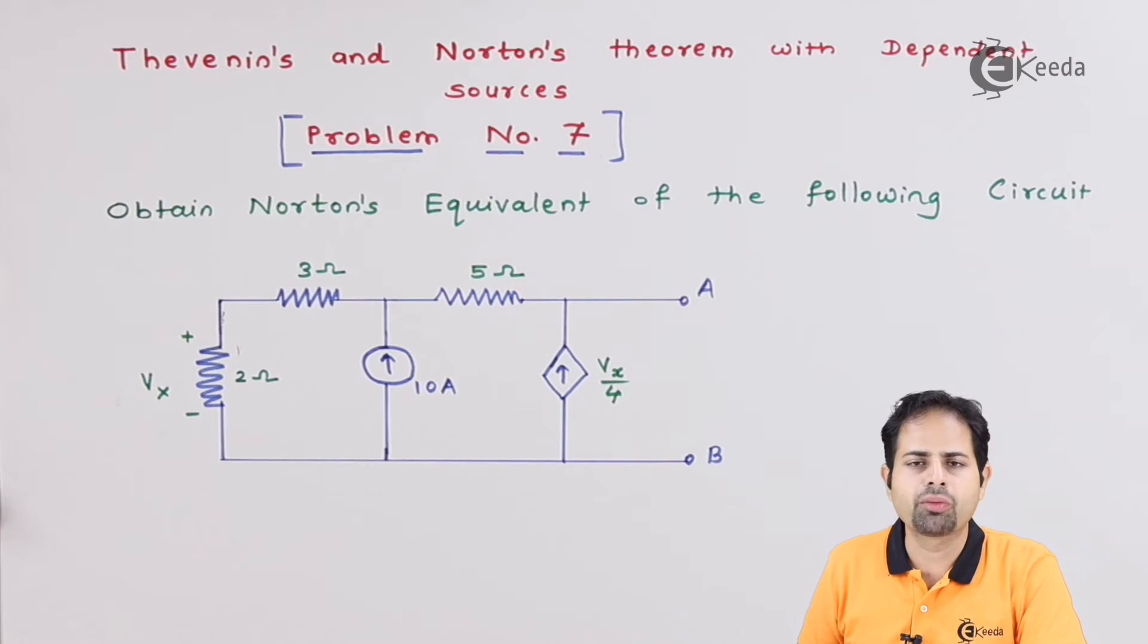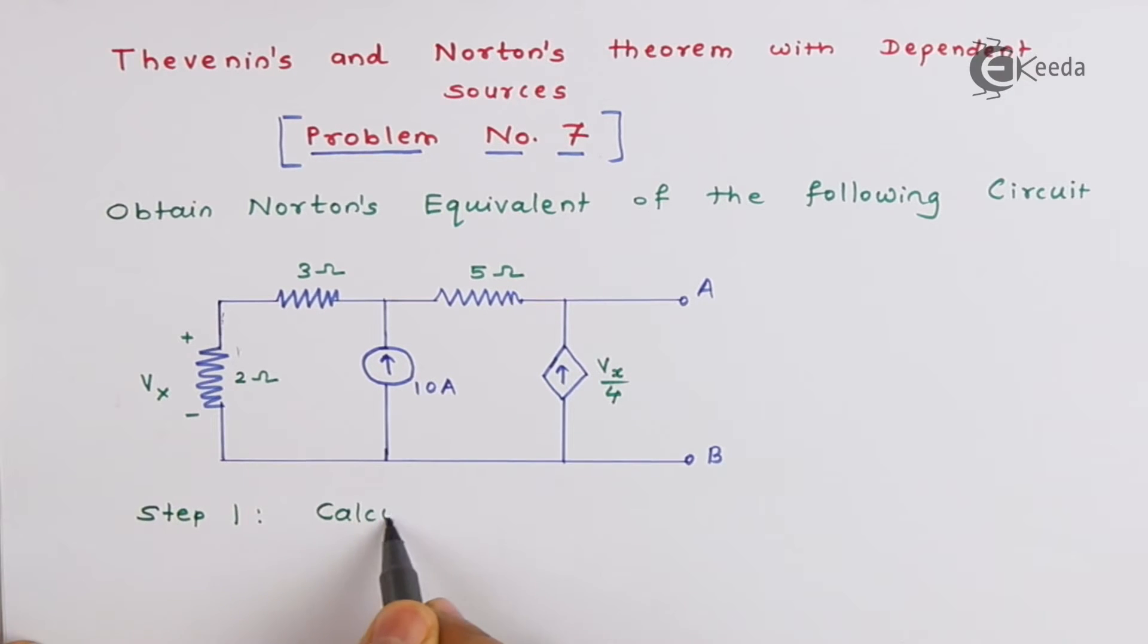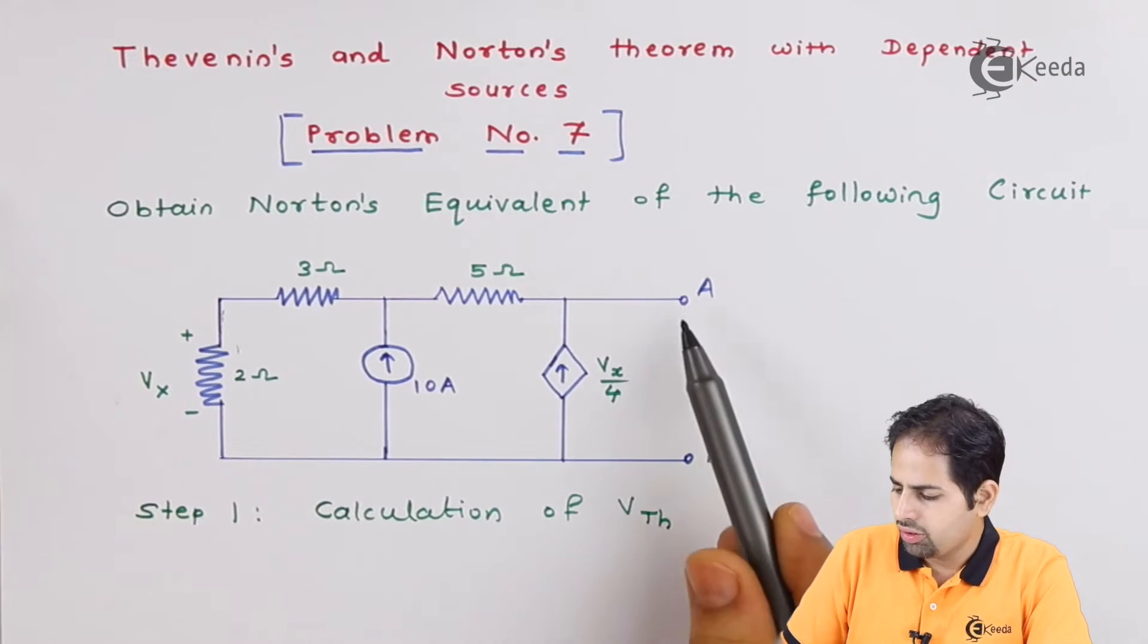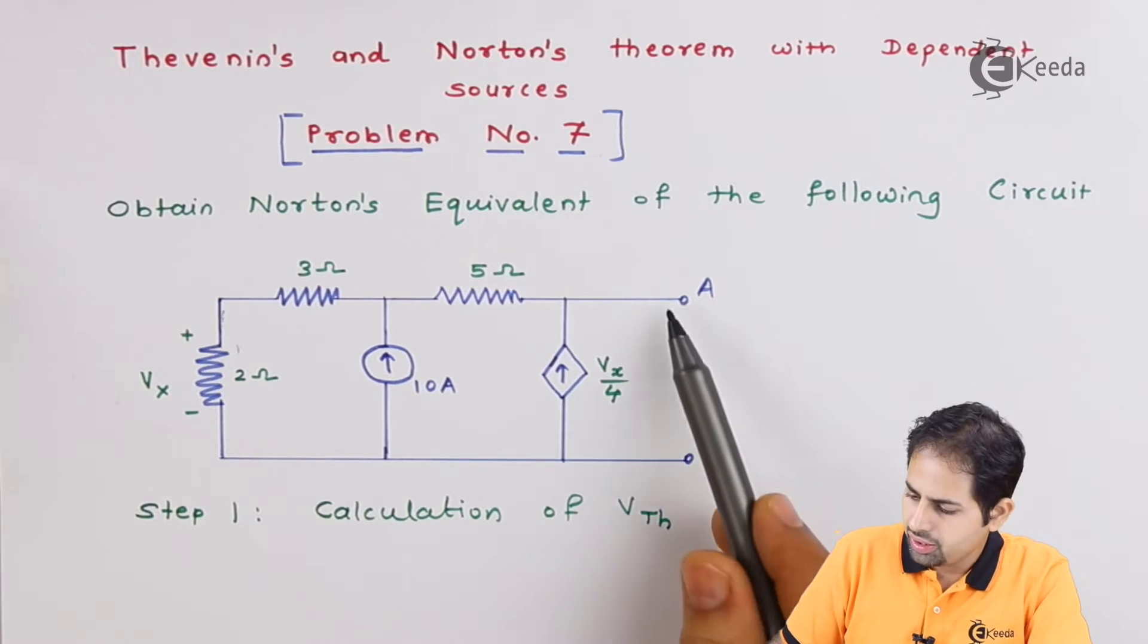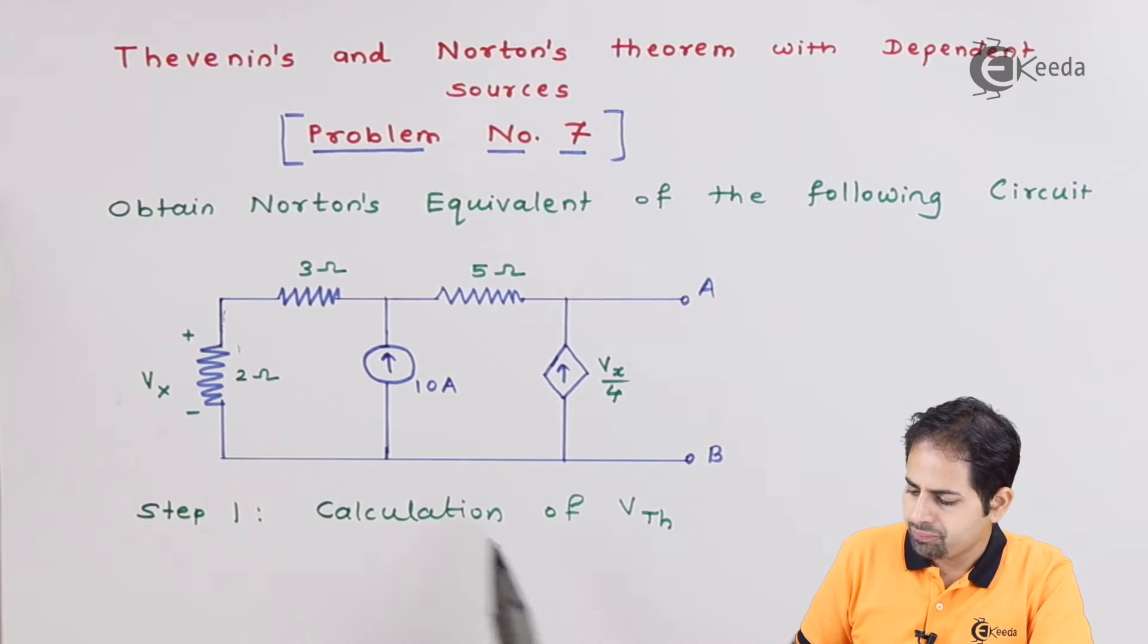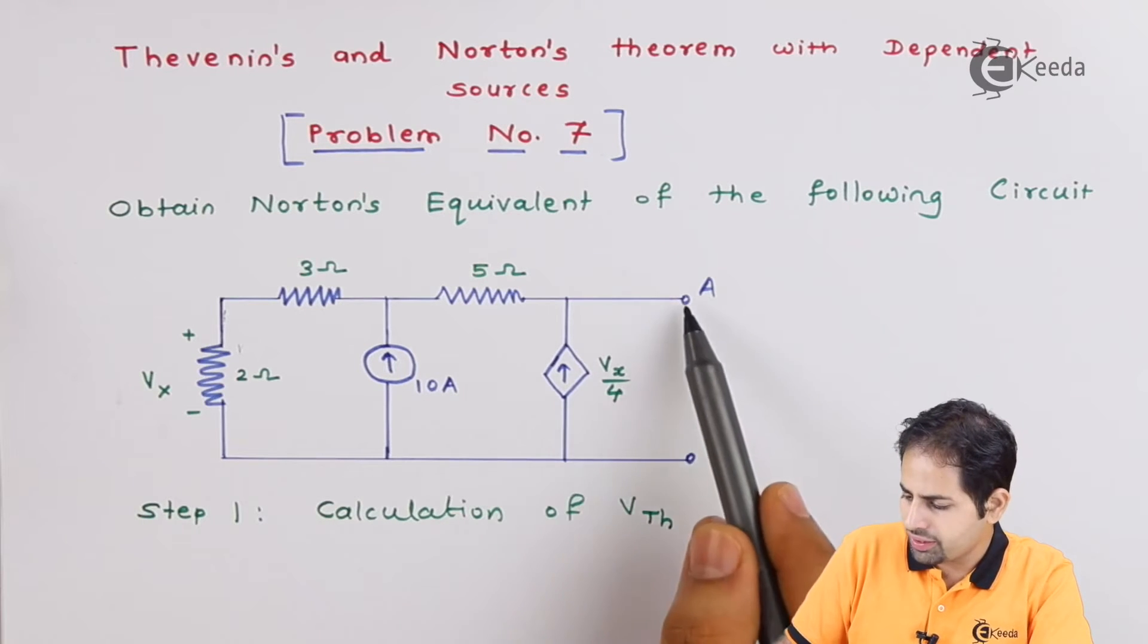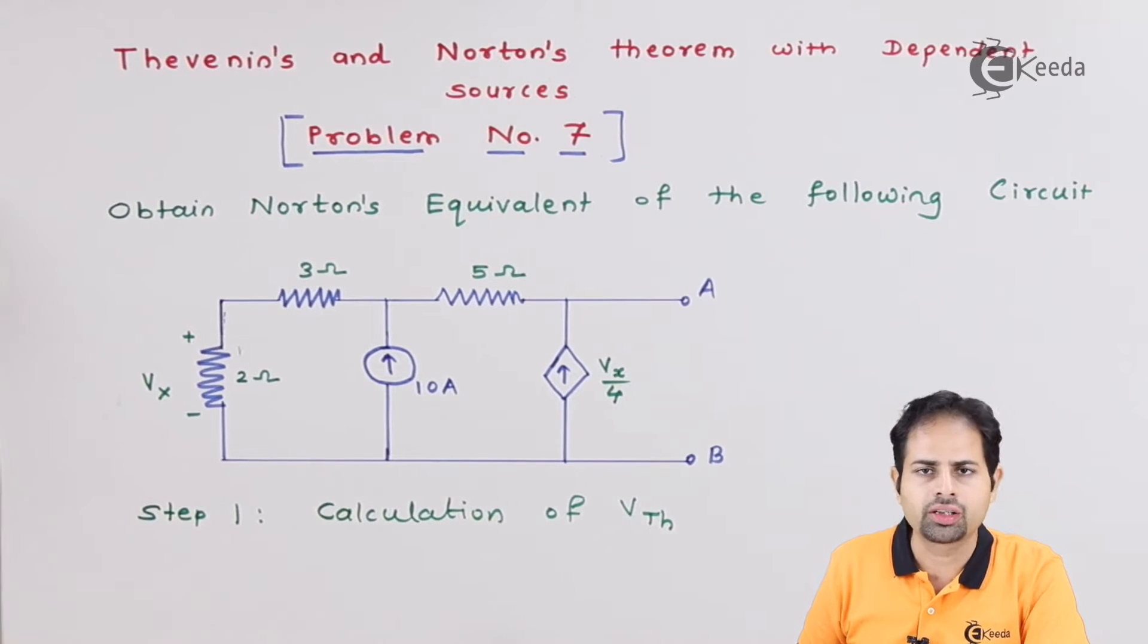So let us start with step number 1, that is calculation of Vth. Here they have asked us to find voltage Vth between these points A and B. It has been given in the question that you have to find a Norton's equivalent circuit out of this. So for Vth we will have this one loop, second loop, and if you can make this as third loop just by a dotted line.